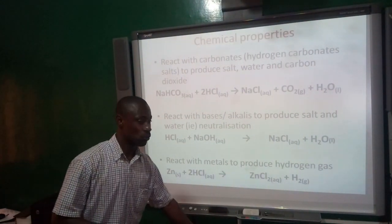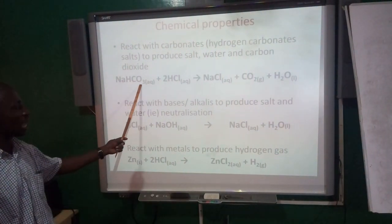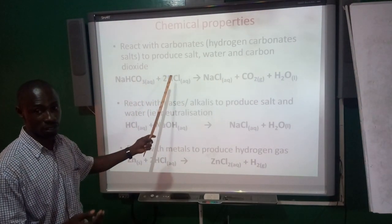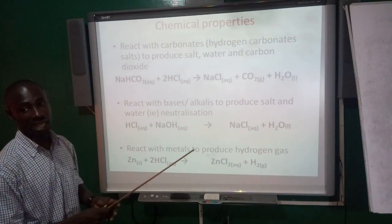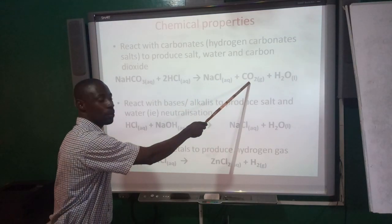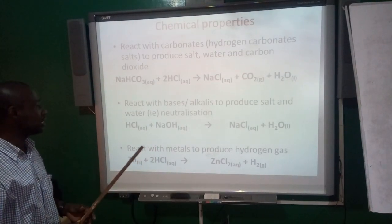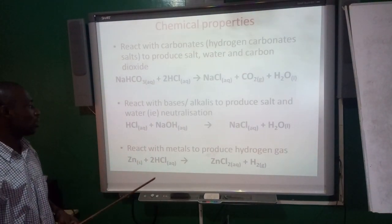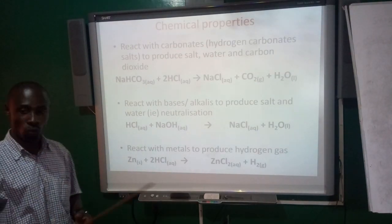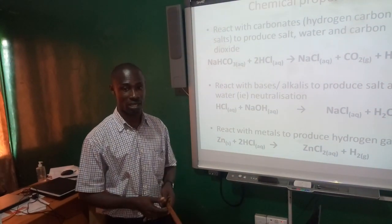We are privileged to have an equation here. This is sodium hydrogen carbonate in aqueous form, with reaction with HCl, hydrochloric acid. The products are: salt, which is sodium chloride, then carbon dioxide, and water. The other chemical property is that acids react with bases or even alkali to produce salt and water. And this is a process that we call a neutralization reaction.